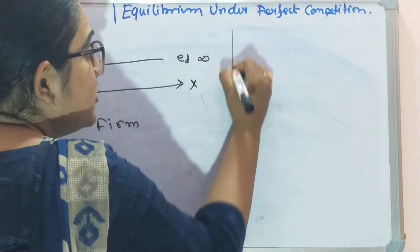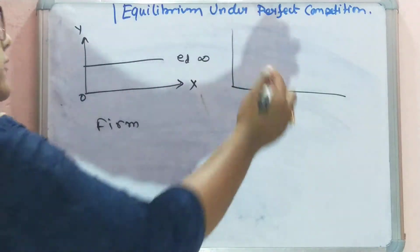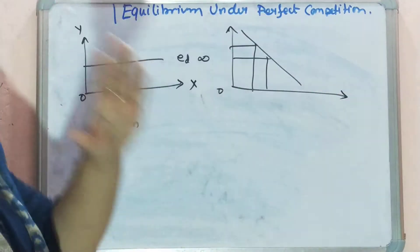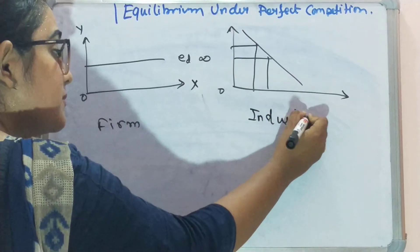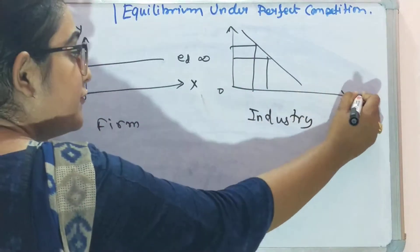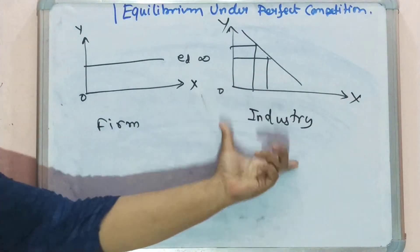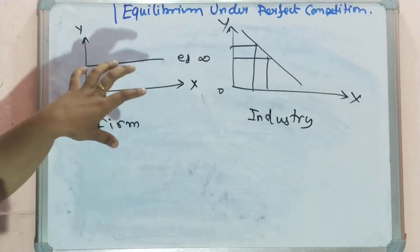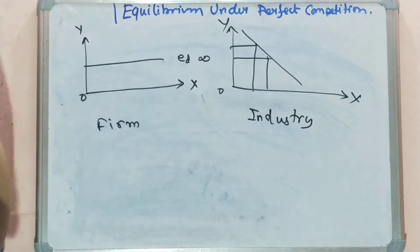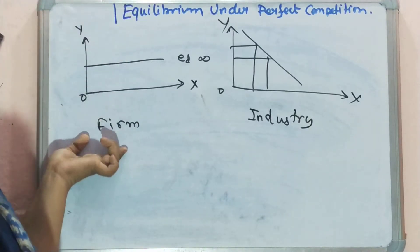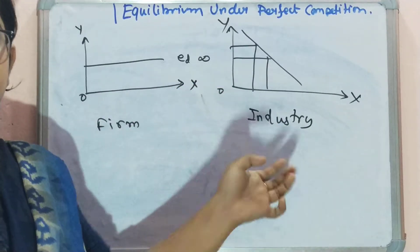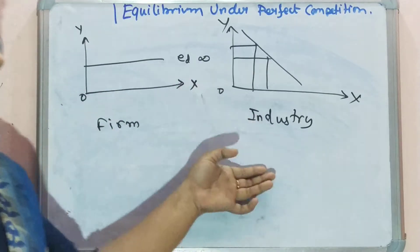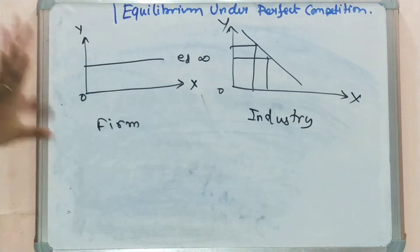But if we go to the industry, the demand curve is negatively sloped — demand curves are always negatively sloped. So here we get a normal demand curve. This is for industry. The difference exists because the decisions of one firm do not affect the market, but when 10 or 20 firms together act, that does affect the market.